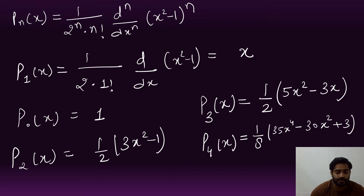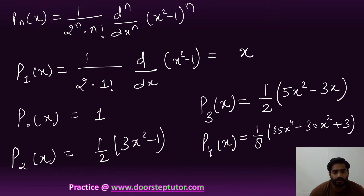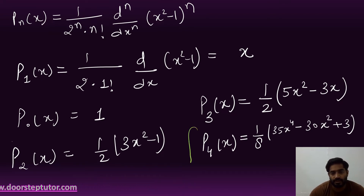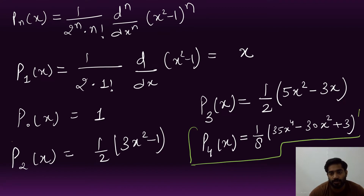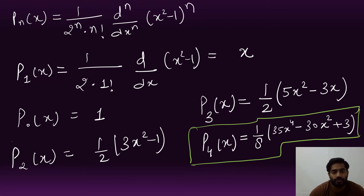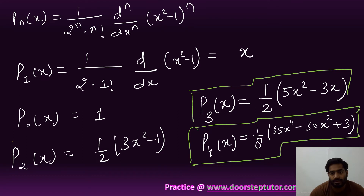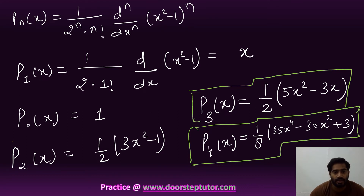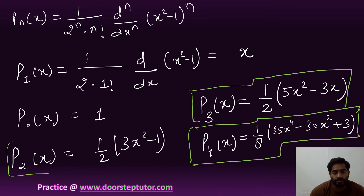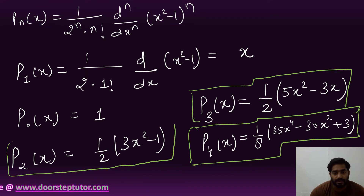At least these four or five values we must remember. P3 and especially P4 are difficult to remember. Just remember P3 and P4; the others are easy since P0 = 1 and P1 = x.